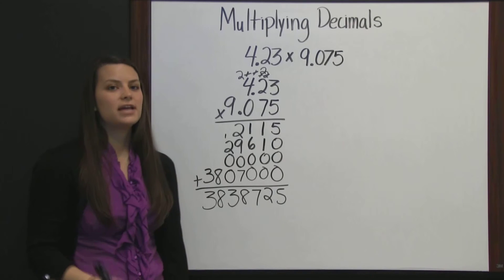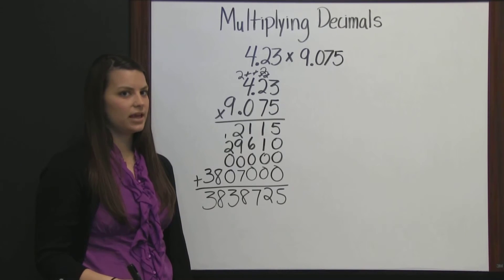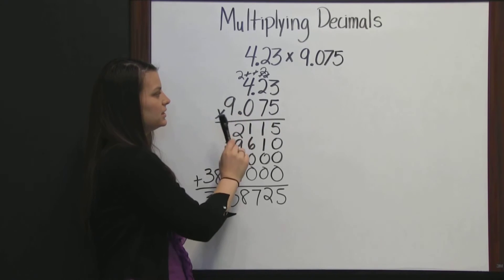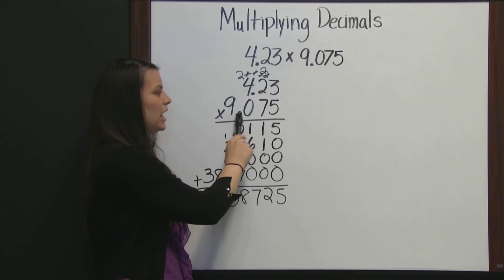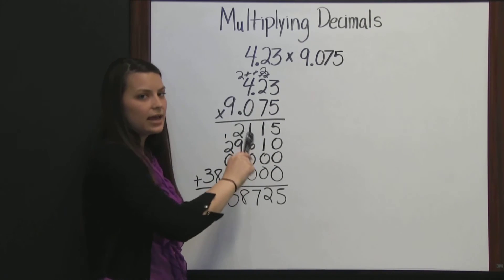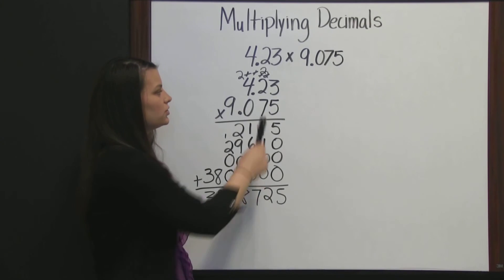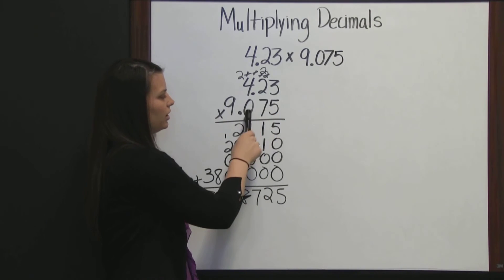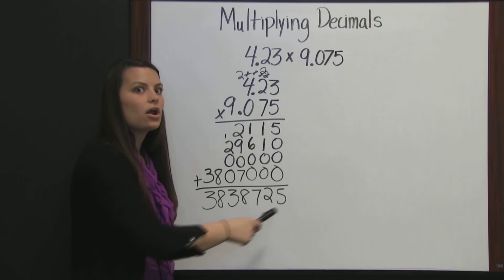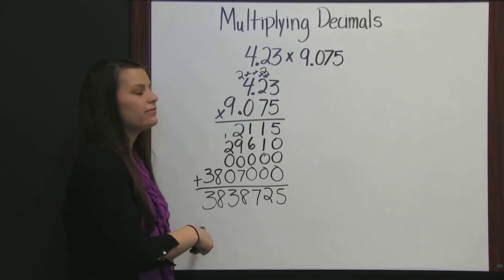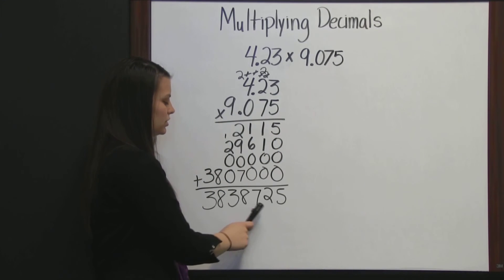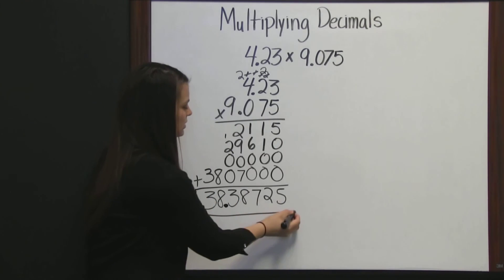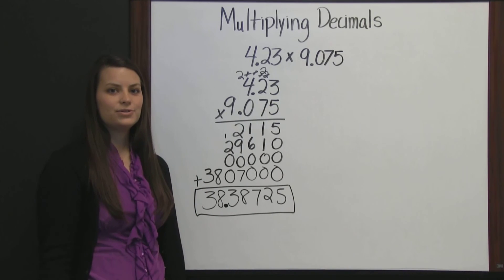To determine where the decimal point goes when you've multiplied your decimals together, we're going to take how many numbers there were behind our decimal in our first number and how many numbers there were behind our decimal in our second number, and add those together. Since we had 2 numbers behind the decimal here and 3 numbers behind the decimal here, then our result will have 5 numbers behind the decimal. 2 plus 3 is 5. 1, 2, 3, 4, 5. So this is the result of multiplying my 2 decimals together.